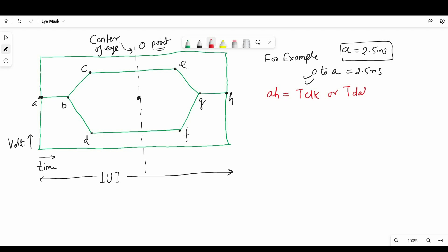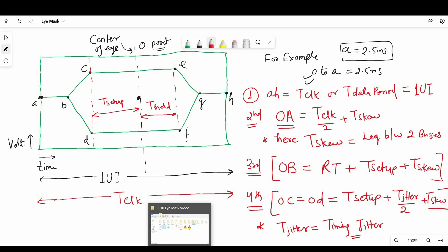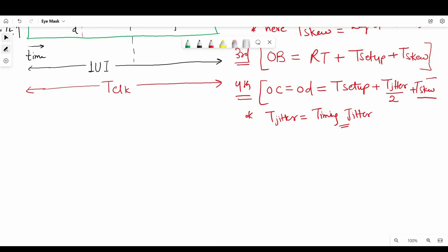So first one is AH is equal to Tclock or we can say Tdata period which will be equal to 1 unit interval, where Tclock is clock period in this case. Second one is OA is equal to Tclock/2 plus Tskew. Now this is very useful information. Here skew is skew between two buses. Third point calculation can be done using OB is equal to rise time plus Tsetup plus Tskew, and here Tsetup is setup time that you will get with respect to clock. Now fourth point which is OC is equal to OD is equal to Tsetup plus Tjitter/2 plus Tskew. Here Tjitter is timing jitter that we will get from the datasheet. Alright, so this was left half of eye mask.